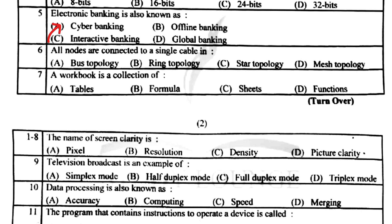All nodes are connected to a single cable in bus topology. A workbook is a collection of sheets. The name of screen clarity is resolution. Television broadcast is an example of simplex mode. Data processing is also known as computing.